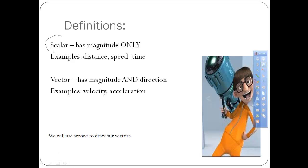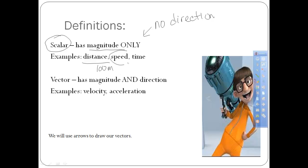What is a vector? A scalar quantity is something that has magnitude only, meaning there's no direction attached to it. A scalar would be something like distance — when we describe the distance something has moved, we don't specify what direction it ended up; we just say it moved 100 meters. Speed is another example of a scalar quantity — it has no direction. And time, of course, only goes one way, so it can't really have a specific direction.